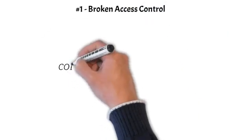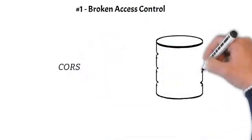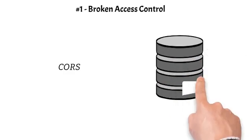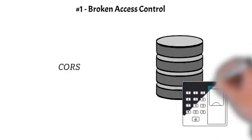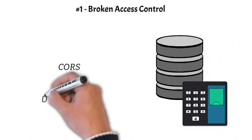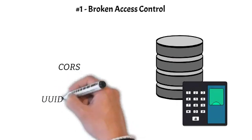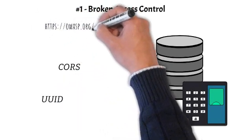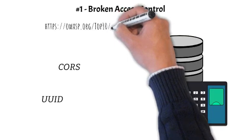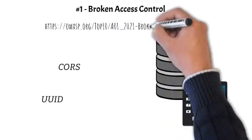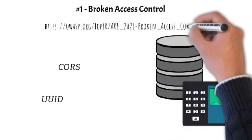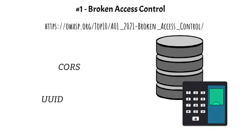Number 1: Broken Access Control. Moves up from the fifth position; 94% of applications were tested for some form of broken access control. The 34 Common Weakness Enumerations (CWEs) mapped to broken access control had more occurrences in applications than any other category.